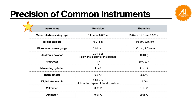A protractor has a precision of 1 degree. A measuring cylinder reads to the nearest whole number, so 1 cm³. For a thermometer, the precision is 0.5 degrees Celsius, so readings can be either like 26.5 or 24.0 — that is, 1 decimal place where the decimal can only be a 0 or 5.